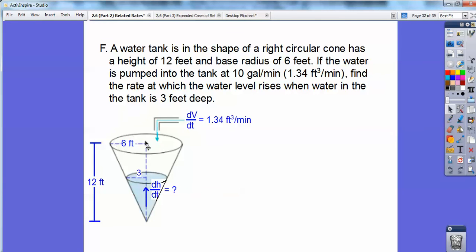12 feet high. The radius is 6 feet. And I'm looking for, when this is 3, I'm looking for how fast is this water level rising. So this is dH dt. If that's my H right there. All right. So volume of a cone, you guys, is 1 third pi times R squared H.